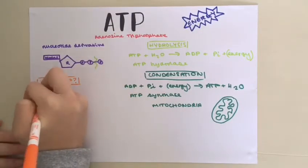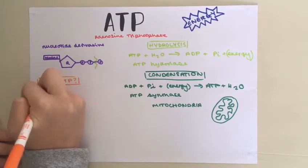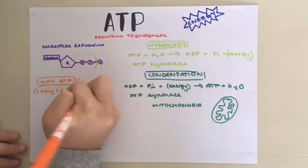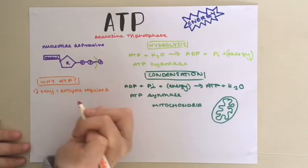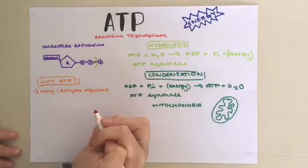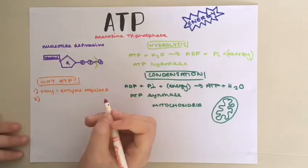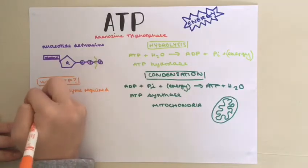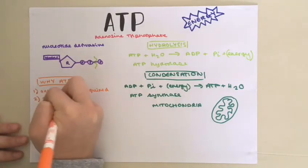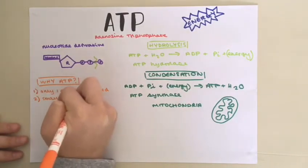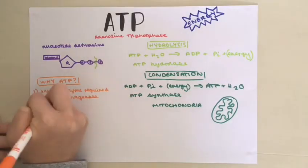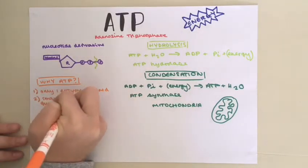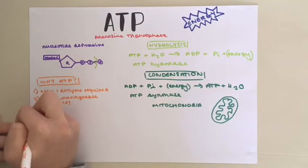Firstly, only one enzyme is required to release energy from ATP, whereas lots of enzymes are required for glucose. Secondly, it releases energy in small, manageable quantities, whereas glucose releases it in large, unmanageable amounts.